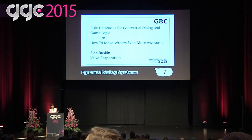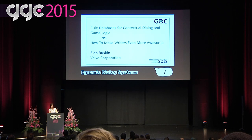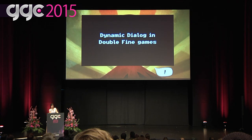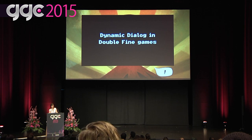Things get trickier if you want your dialogue to be dynamic — logic-driven based on context or game state. It may be possible to represent this with a graphical tool, but I don't recommend starting there. Instead, start with the data that defines the dialogue sequence and the ability to play it in your game. I really urge you to check out these fantastic GDC Vault talks: one by Elon Ruskin of Valve at GDC 2012 called 'Rule Database for Contextual Dialogue and Game Logic,' and one by Jason Gregory of Naughty Dog about dynamic dialogue in The Last of Us.